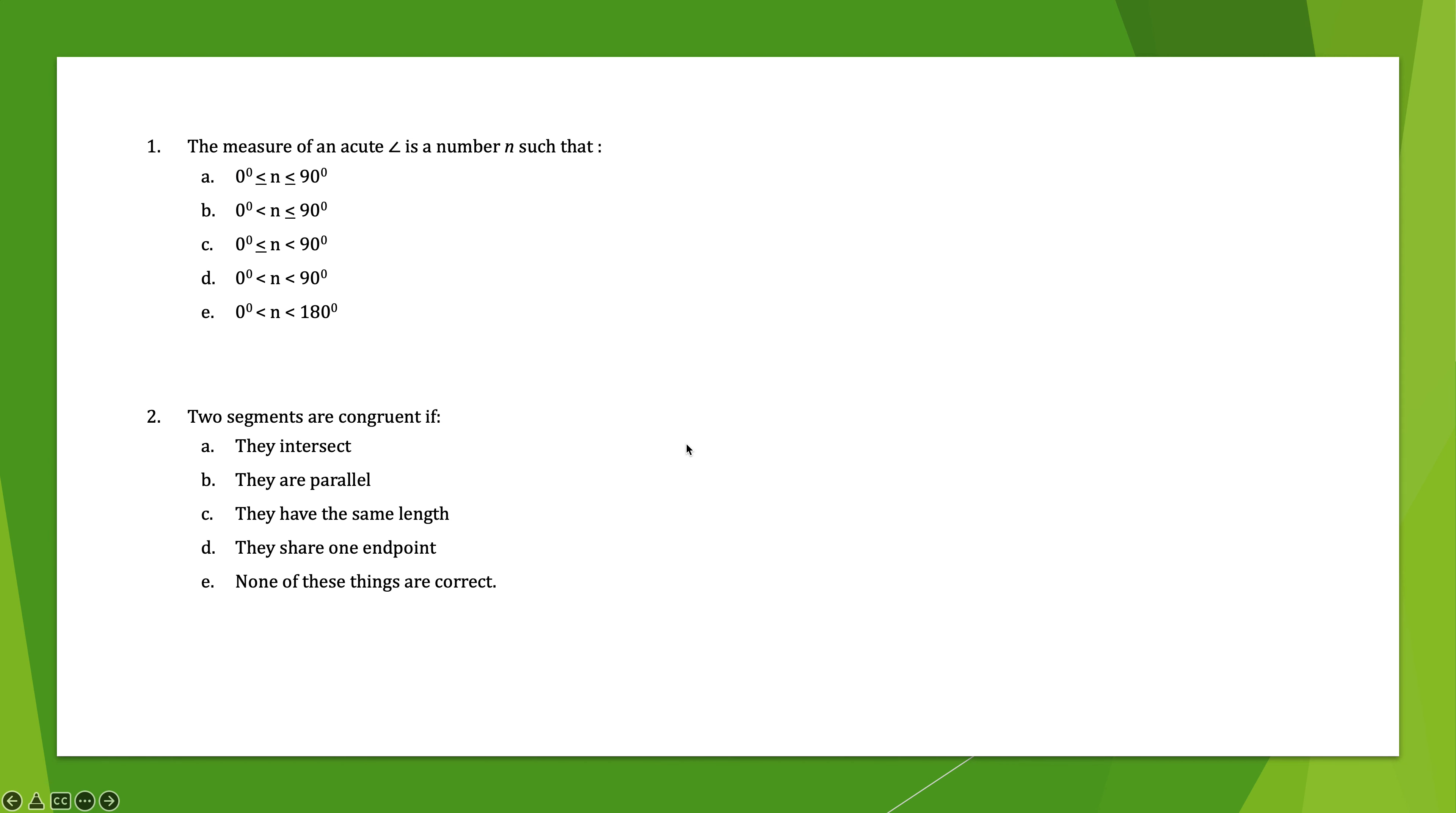Okay. These two questions. Go ahead, stop and start. Okay. The measure of an acute angle is a number N such that N is between 0 and 90. It does not include 90. 90 is a right angle, and it does not include a 0 degree angle. So it is choice D. Two segments are congruent if they have the same length. That's what congruent means. Same size and shape. Okay.